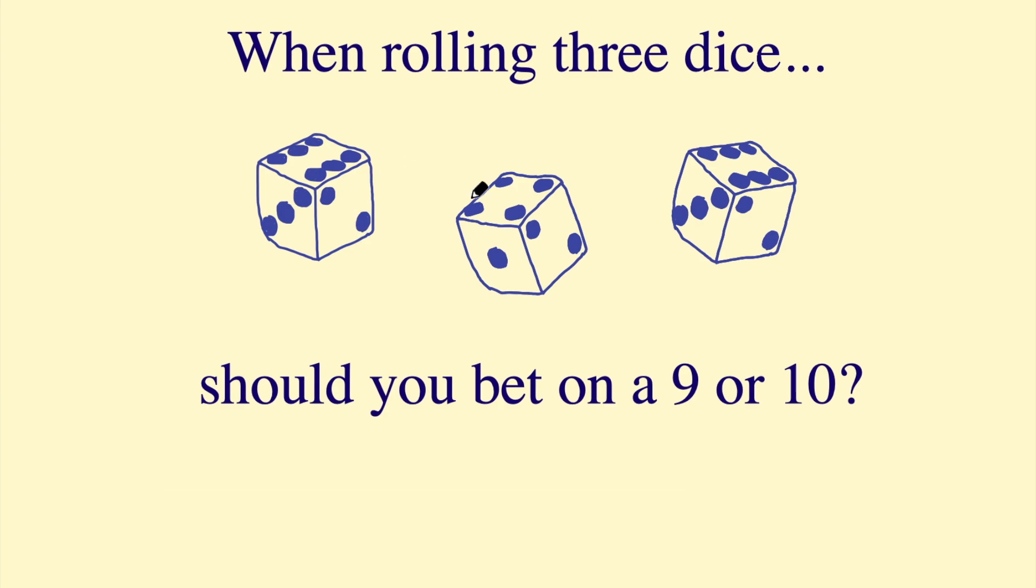It really only depends on two of the dice. So we can look at the probabilities of rolling certain numbers on two dice, and we can figure out the probability of a 9 and a 10 and compare those.